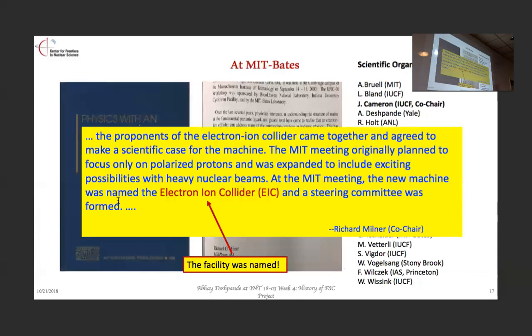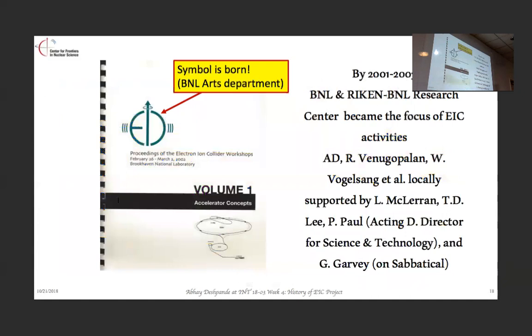The MIT meeting originally planned was only for polarized protons and light nuclei, also only polarized. What expanded to include heavy ion possibilities at MIT, and the new machine was called the Electron-Ion Collider, and a steering committee was formed. This was the place where Richard remembers we first called it fully the Electron-Ion Collider. A long-range plan was declared and we had to start preparing for it. We wrote a paper with Raju Venugopalan and Werner Vogelsang with activities from RHIC.